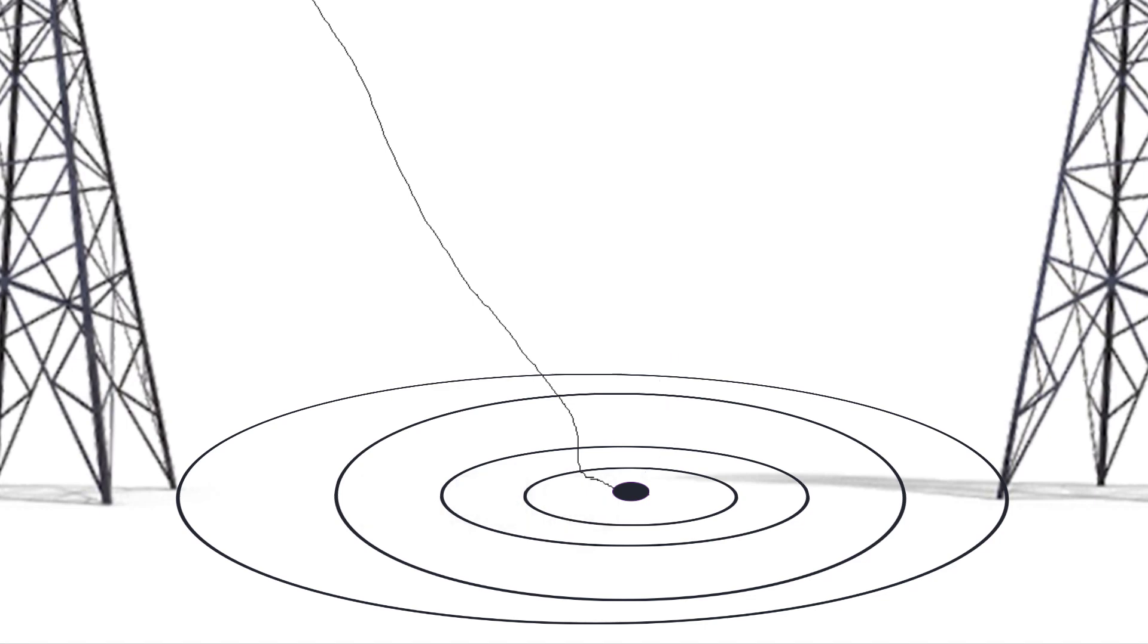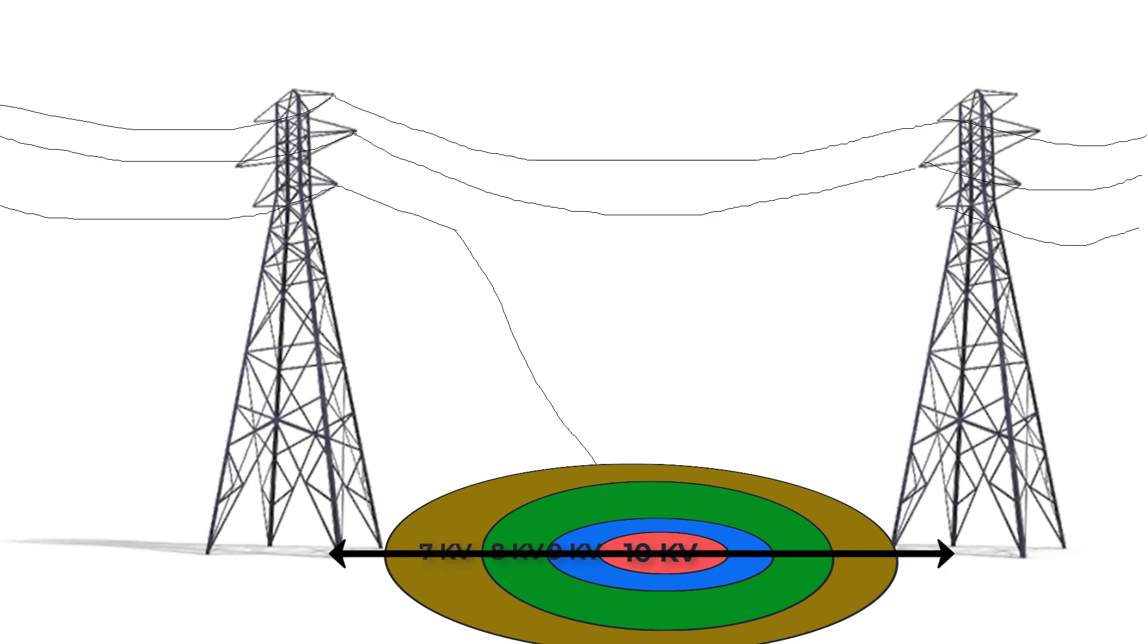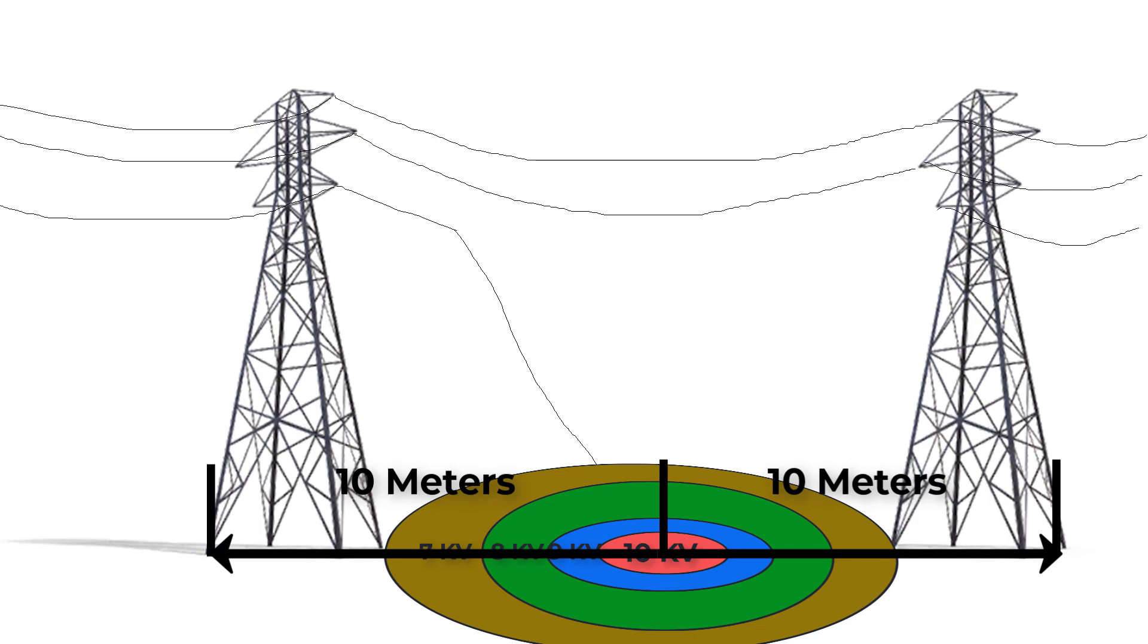Let's take an example here. Consider that the potential at the touching point due to fault is 10 kilovolt. So the other circles will equal 9 kilovolt, 8 kilovolt, 7 kilovolt and so on, until we get out of the faulted area, which is approximately 10 meters or more from the center of the fault.